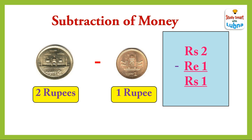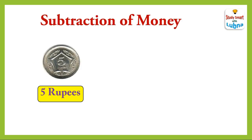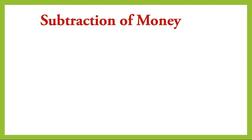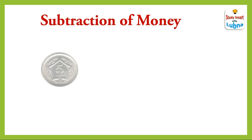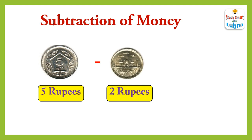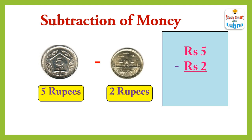When we subtract rupee one from rupees two, we will get rupees one. Five rupees coin minus one rupee coin — when we subtract the one rupee coin from the five rupees coin, we will get rupees four.